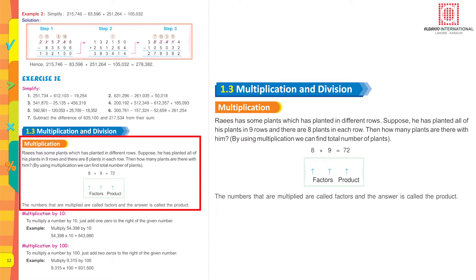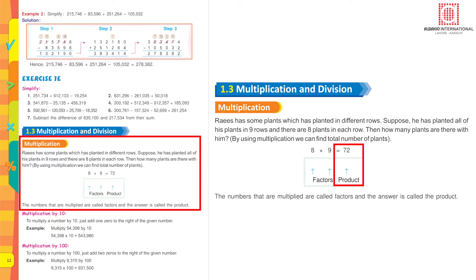Reis has some plants planted in different rows. Suppose he has planted all of his plants in nine rows and there are eight plants in each row — how many plants are there? We use multiplication: eight multiplied by nine equals seventy-two. The two numbers we multiply together are called factors and the answer is called the product.